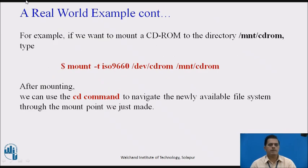To mount a CD-ROM, the /mnt directory, by Unix convention, is where temporary mounts such as CD-ROM drives, remote network drives, and floppy drives are located. To mount a file system, use the mount command with the following syntax. For example, if you want to mount a CD-ROM to the directory /mnt/cdrom, type: 'mount -t iso9660 /dev/cdrom /mnt/cdrom'. This assumes that your CD-ROM device is called /dev/cdrom and that you want to mount it to the /mnt/cdrom directory. Refer to the mount man page or type 'mount -h' for help information. After mounting, you can use the cd command to navigate the newly available file system through the mount point.